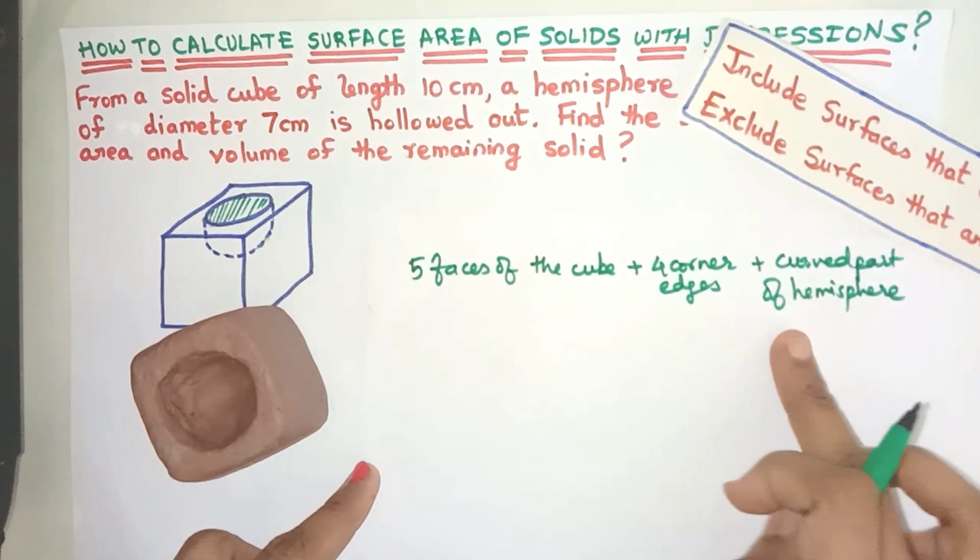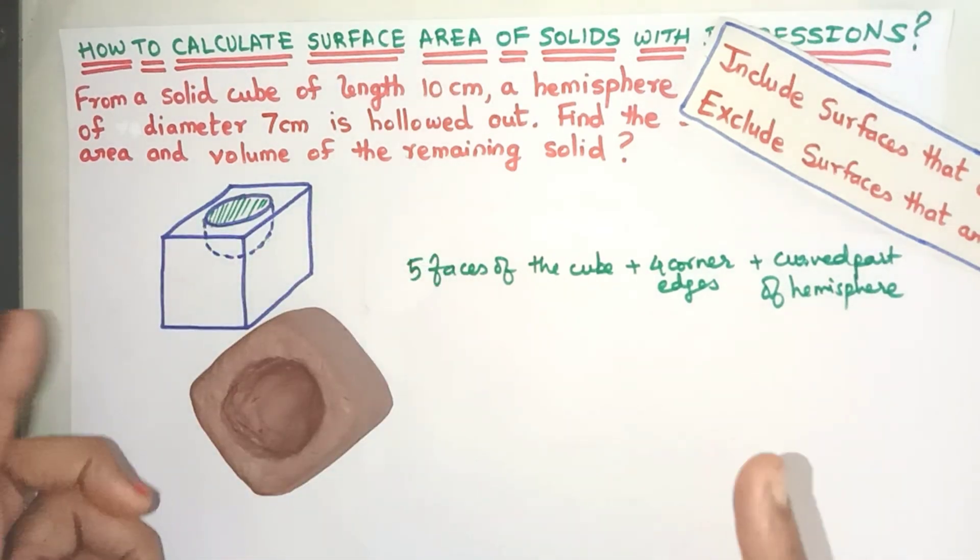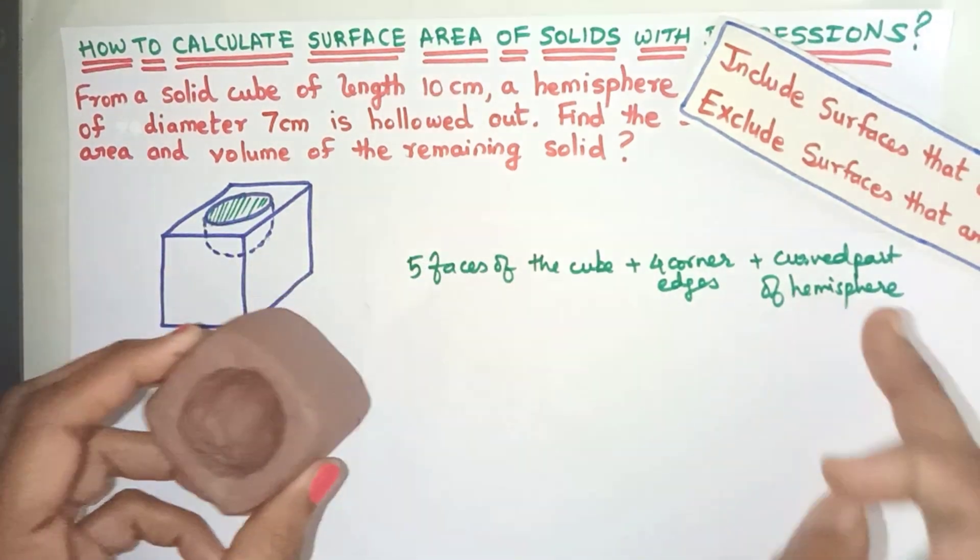So we have now decided which surfaces we have to consider for finding the surface area. Now let's see how do we find the areas of these surfaces?